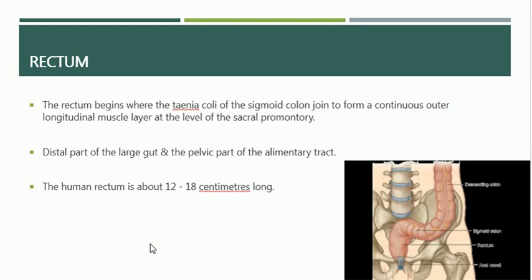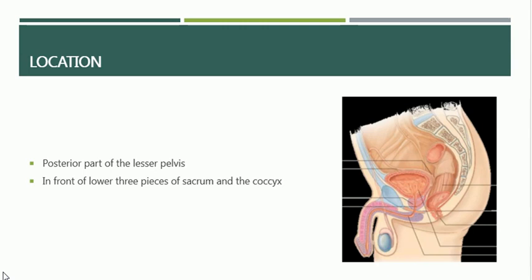Moving on to the gross anatomy of the rectum — its location. The rectum is located in the posterior part of the lesser pelvis. The pelvis is usually divided into a major pelvis and a minor or lesser pelvis. The rectum is located in the posterior part of the lesser pelvis, in front of the lower three pieces of the sacrum and coccyx.